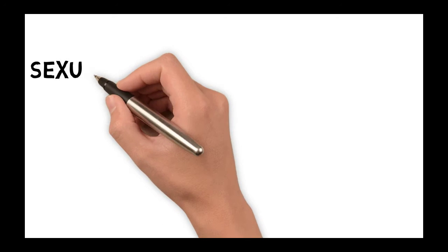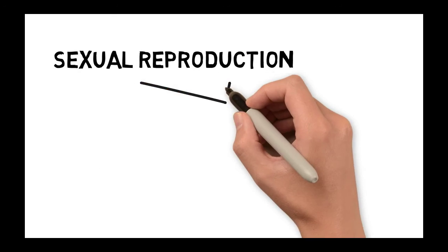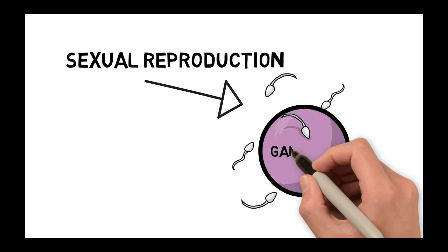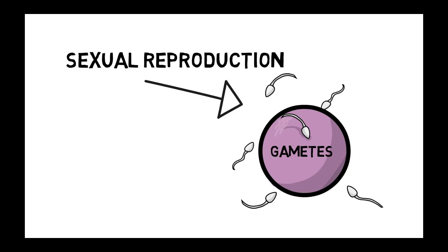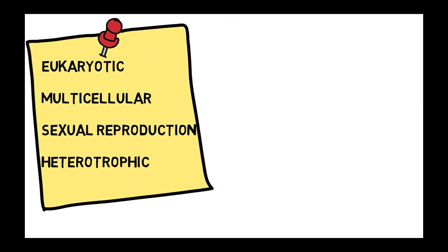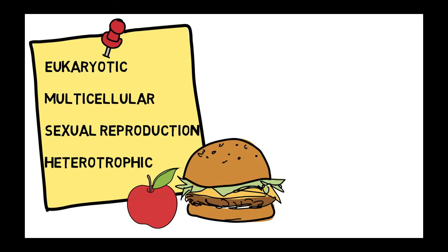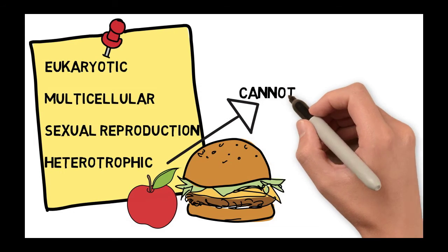Sexual reproduction is another feature of the animal kingdom, and it involves the fusion of those special cells known as gametes. Also, organisms in the animal kingdom cannot make their own food, and therefore they are heterotrophic.